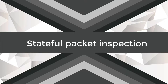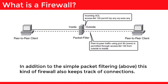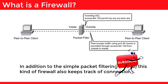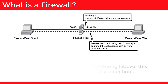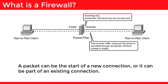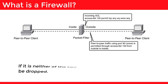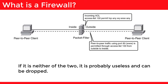The next type is stateful packet inspection. In addition to simple packet filtering, this kind of firewall also keeps track of connections. A packet can be the start of a new connection, or it can be part of an existing connection. If it is neither of the two, it is probably useless and can be dropped.